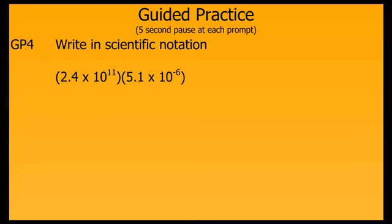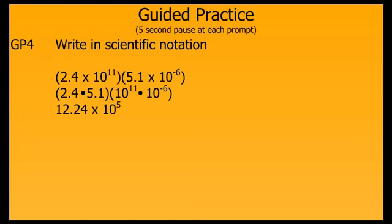This problem involves a product of two numbers in scientific notation. We group the c part together and the powers of 10 part together to make this easier. We multiply 2.4 by 5.1 to get 12.24, and the powers of 10 together to get 10 to the 5th. But we're not finished, because 12.24 is not a number between 1 and 10. So we move the decimal one more place to get 1.224, which gives us one more factor of 10, making it 10 to the 6th. Our final answer in scientific notation is 1.224 times 10 to the 6th.